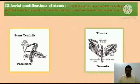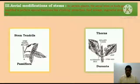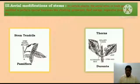The second type is thorns. These are straight, pointed, hard structures; sometimes they bear leaves or flowers, and may even be branched. In Citrus and Durantha plants, thorns are modified axillary buds. Example: Citrus and Durantha.